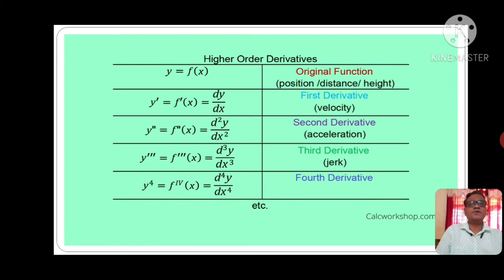Now, if we differentiate again y dash with respect to x, we get y double dash, means f double dash x, means d²y by dx². This is the second derivative; it is called acceleration because y dash is velocity. Now, if we again differentiate y double dash with respect to x, we get y triple dash is equal to f triple dash x, is equal to d³y by dx³. This is the third derivative. It is jerk.